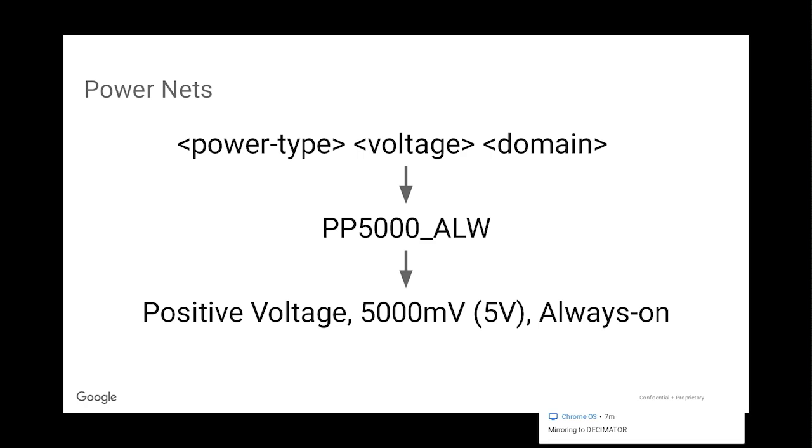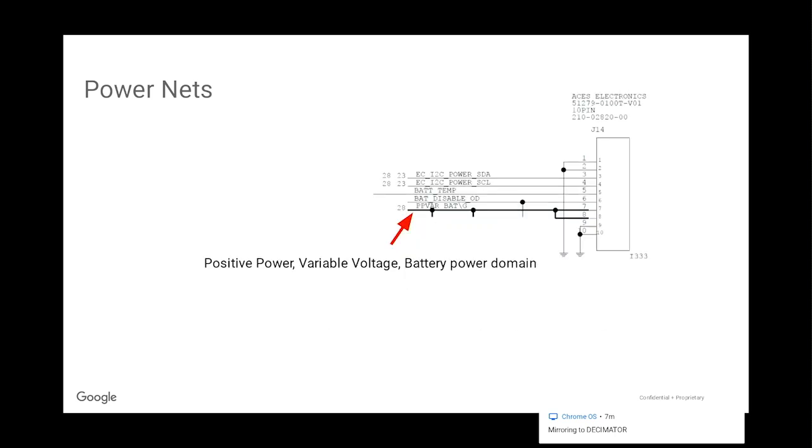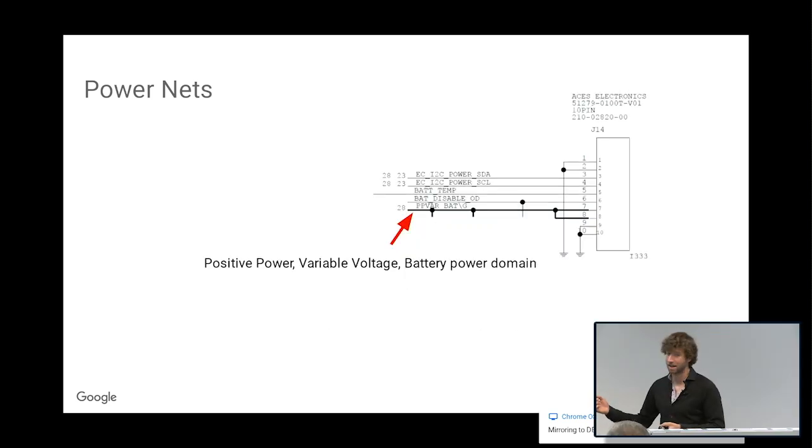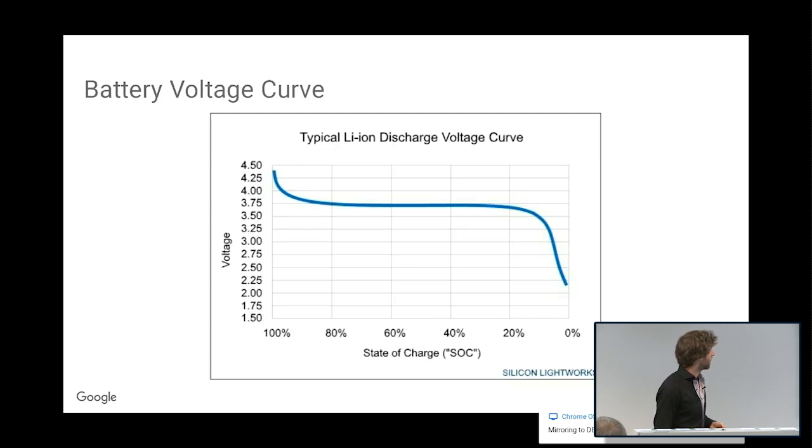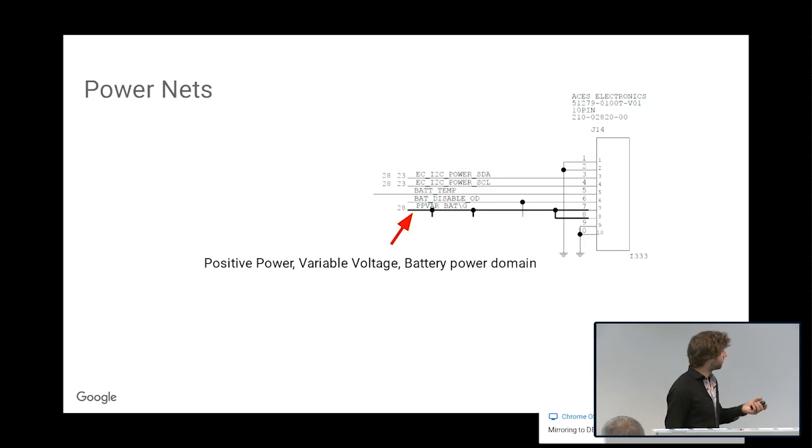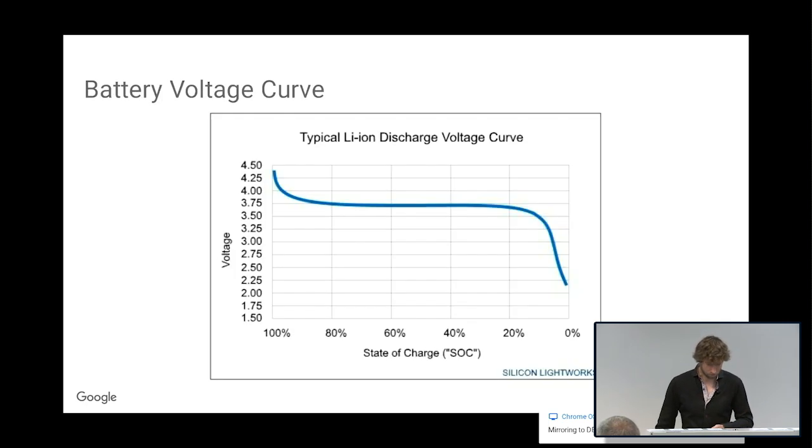Here's an example: PP5000_ALWAYS. It's positive, it's five volts, and it's always on. Back to our schematic, we have PP_VAR_BAT. So positive power, variable voltage, and it's the battery. It makes sense because a battery, as you charge and discharge it, its voltage changes. This is why it's PP_VAR and not PP some known number.